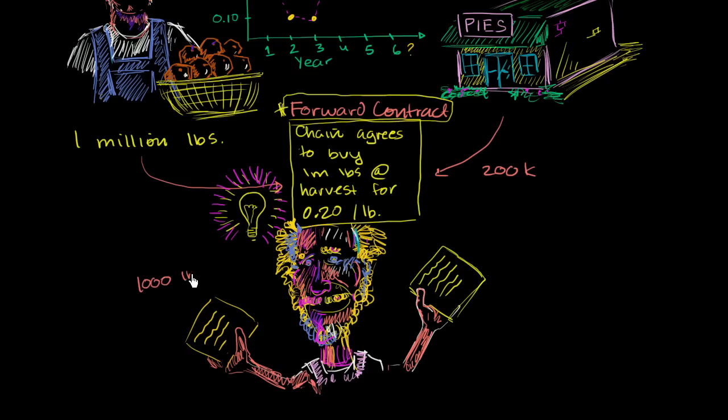So I say 1,000 pounds of apples for delivery on November 15th. And every one of these contracts say the same thing. 1,000 pounds of apples for delivery on 11-15.